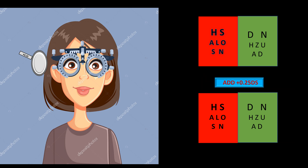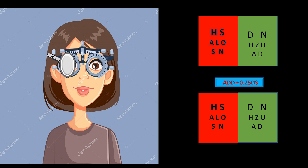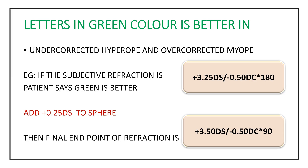In the second clinical setting, if the patient says green is more prominent than red, you add plus 0.25 to the existing subjective refraction. Adding plus 0.25 makes both the red and green colors equally clear. This situation is seen in an under-corrected hyperope or an over-corrected myope.